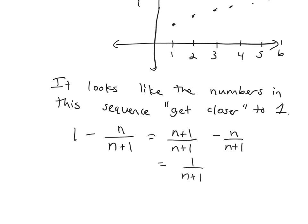And now we want to think about that's the difference between 1 and the numbers in our sequence. And we're looking as our numbers are getting larger. So as n gets larger, what's happening to this fraction? It gets closer to 0.